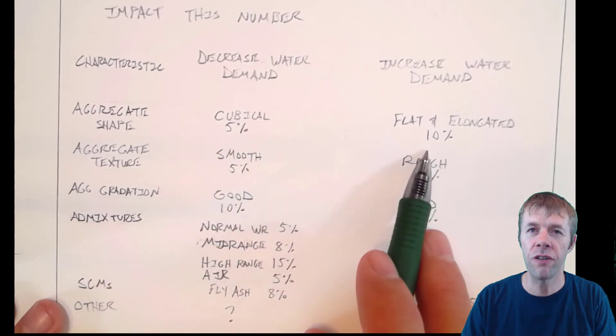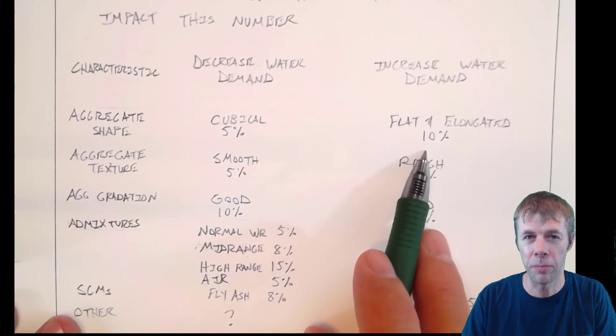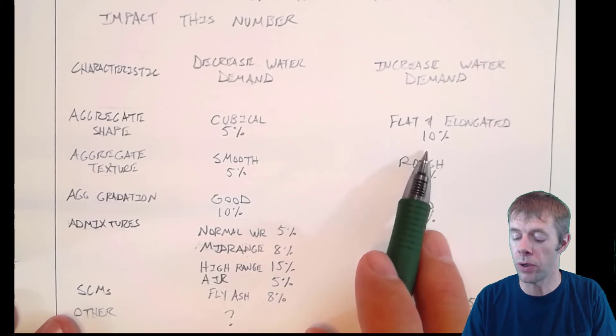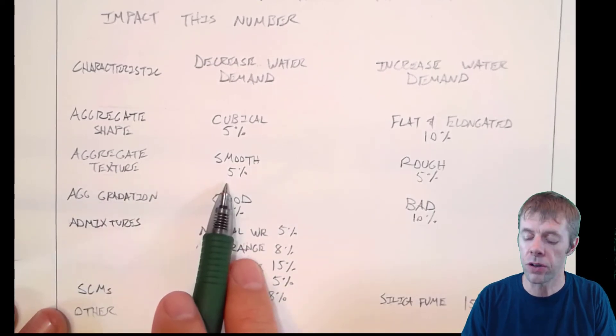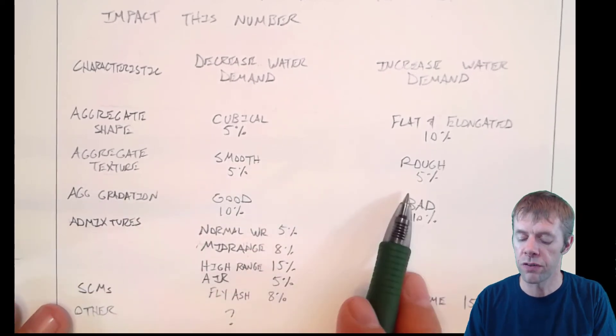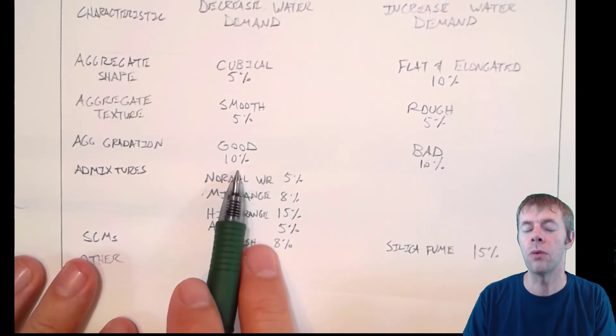But if I get aggregates that are very, very flat and elongated, then it actually might increase the number from a reduction of 0.8 to maybe a reduction of 0.9. Your texture of your aggregate matters. If your aggregate is smooth versus rough. Your aggregate gradation. What is a good aggregate gradation? Don't worry,